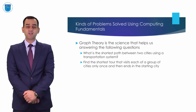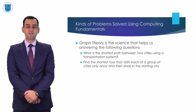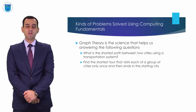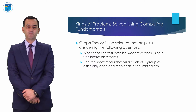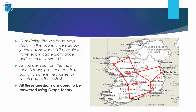Graph theory is the science that helps us answer the following questions: What is the shortest path between two cities using a transportation system? Find the shortest tour that visits each of a group of cities only once and then ends in the starting city. Considering the Irish roadmap shown in the figure, if we start our journey at Newport, is it possible to travel each road exactly once and return to Newport?